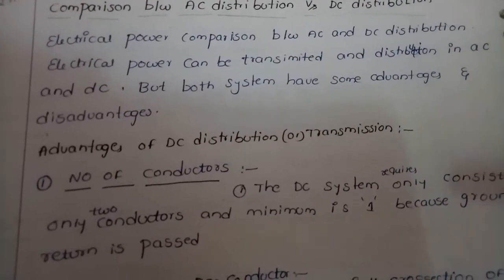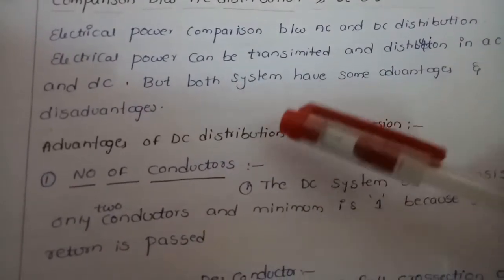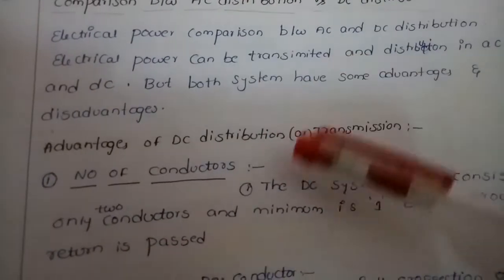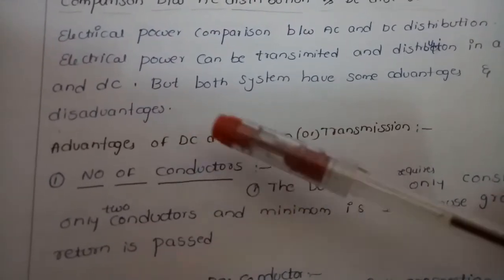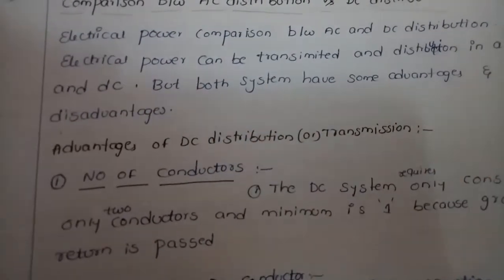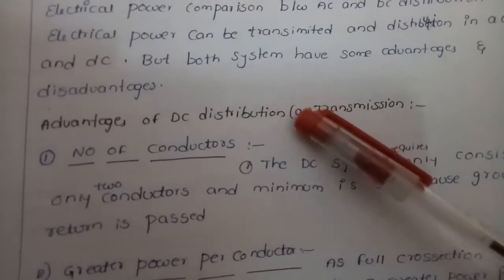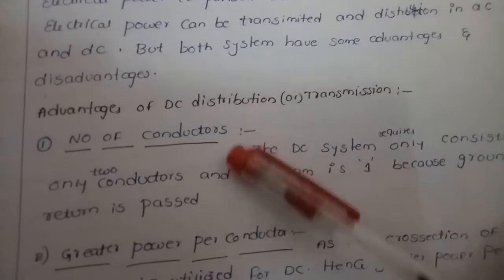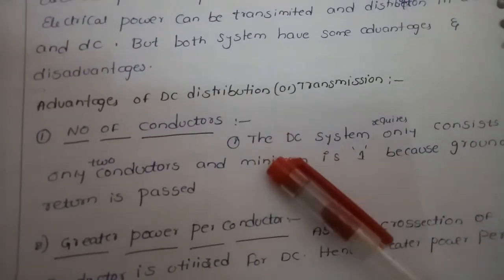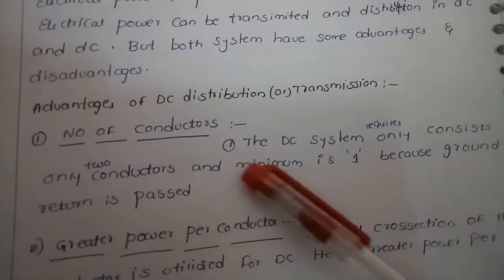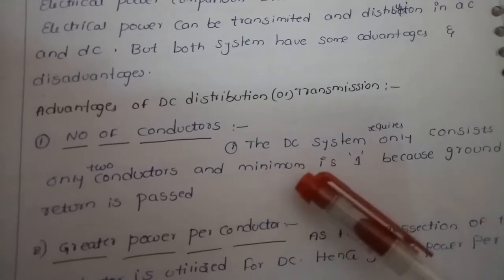The first advantage of DC distribution is the number of conductors required. In DC systems, only two conductors are required, and the minimum is one conductor, because a ground return path can be used. This is fewer than what is required in AC systems.